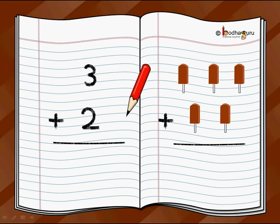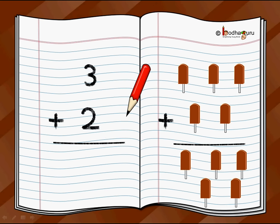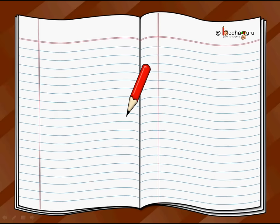So how many total ice creams do I have? Let's count: one, two, three, four, and five ice creams. So we write this as three plus two is equal to five. This is the way you can easily write any addition problem. You can also write this as three plus two is equal to five.